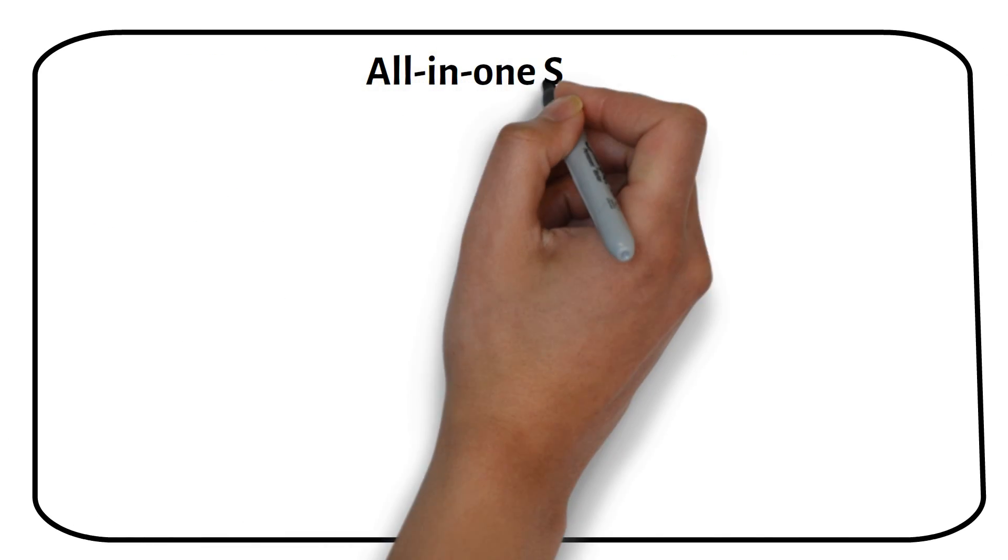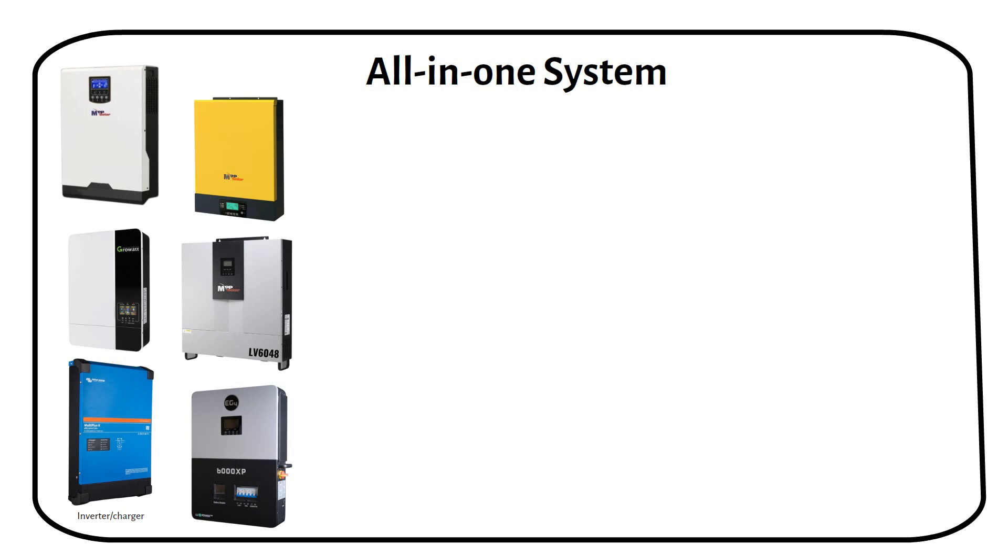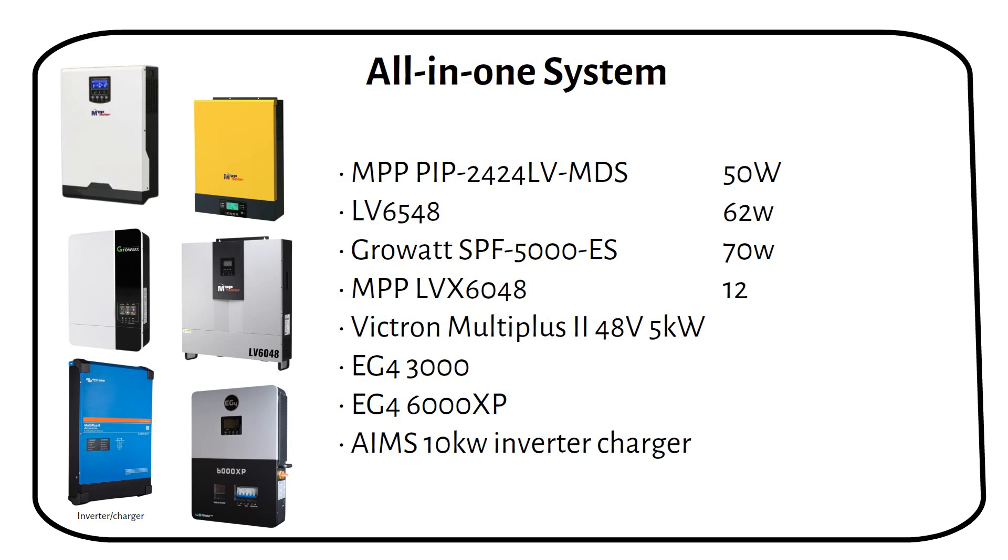An all-in-one system is an MPPT charge controller, inverter, and a battery charger in one device. But what many people don't realize is that these consume power even when no load is applied. This is called idle power consumption. It's the amount of power the inverter uses just to stay on and ready to provide power when it's needed. Here are some popular all-in-one inverters and their idle power consumption.